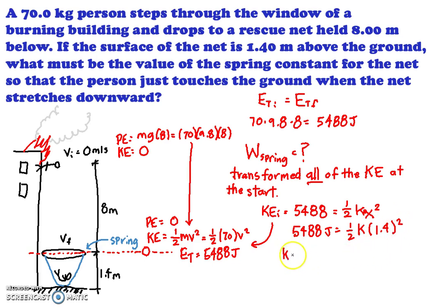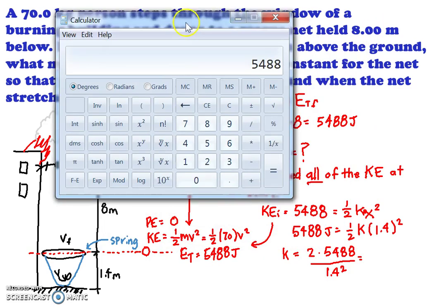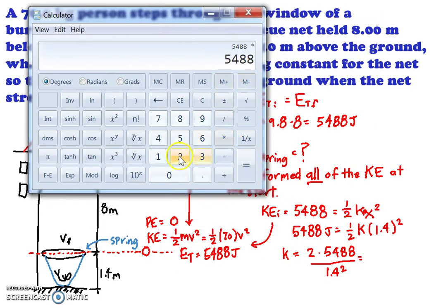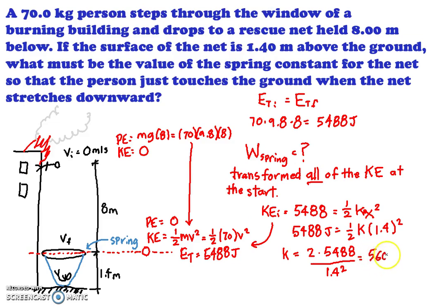So, to find my k value, all I got to do is simply say, well, it's going to be equal to 2 times 5,488 divided by 1.4 squared. What does that equal to? I have no idea. Let me find it out. Let me see, 5,488 times 2 divided by 1.4 squared equals, okay, nice even number, 5,600. 5,600. And what are the units for k? If you think about it, it's the amount of force per meter. So, newtons per meter.